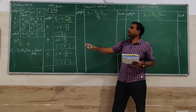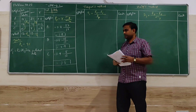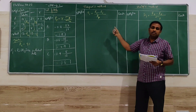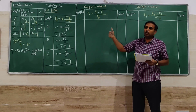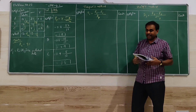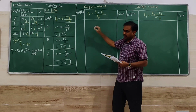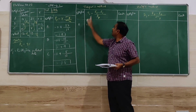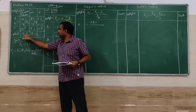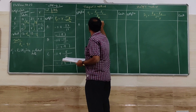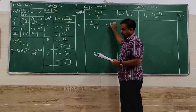Without beta we cannot apply Treynor's method, so we first verify whether beta is given or must be calculated. Now applying Treynor's method — the formula is: (RP − RF) ÷ Beta. This helps us rank which portfolio to invest in. For portfolio A: RP is 18, RF is 9, beta is 1.8, giving a Treynor value of 5.